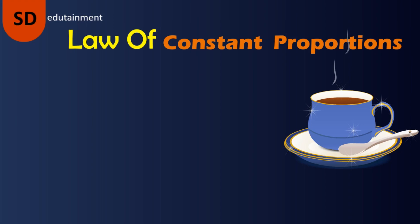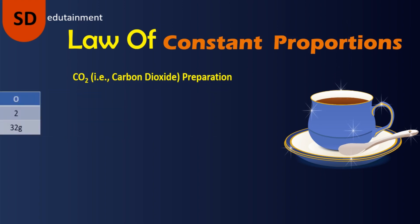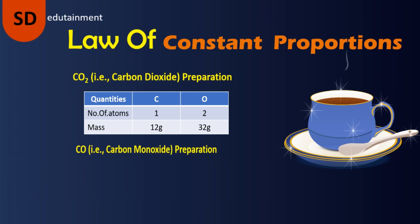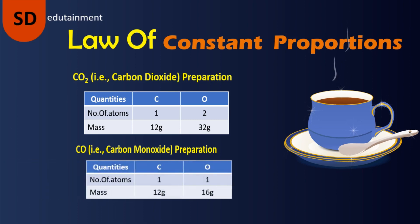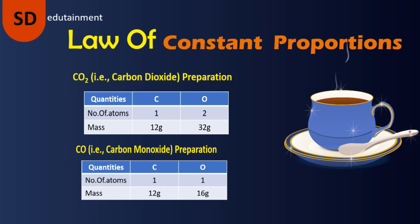For the law of constant proportions: to prepare CO₂ (carbon dioxide), we have to take carbon and oxygen in a 12:32 ratio — for each 12 grams of carbon, we take 32 grams of oxygen. Similarly, to prepare CO (carbon monoxide), we use the same elements — carbon and oxygen — but the ratio is different: 12:16, meaning for each 12 grams of carbon, we take 16 grams of oxygen.